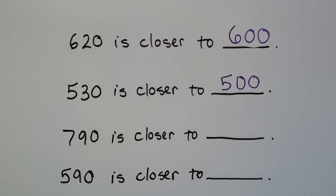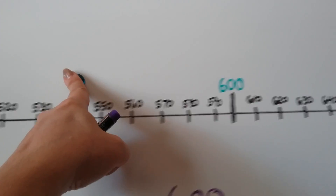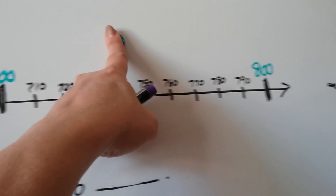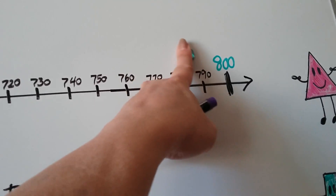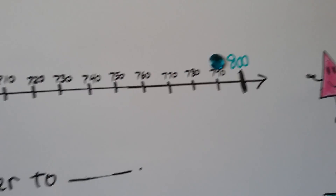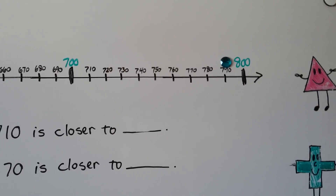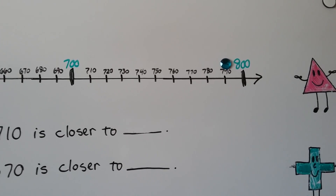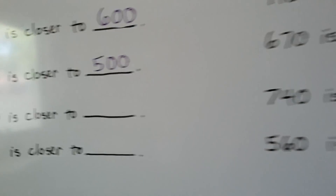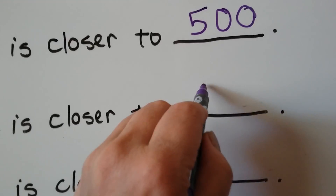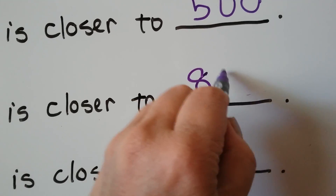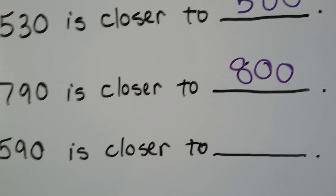Let's try 790. We find 790 on our number line — it's way over here. That's an easy one. It's in between the 700 and the 800, and it's closer to the 800. So 790 rounds to 800 when we round it to the nearest 100.